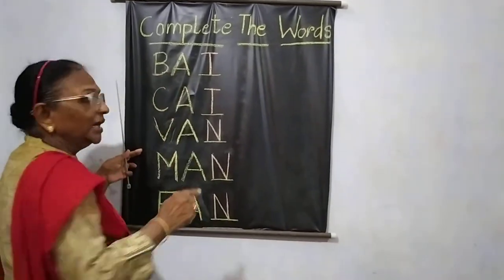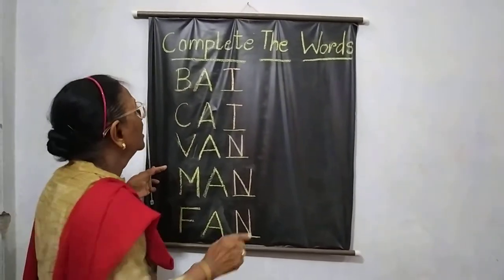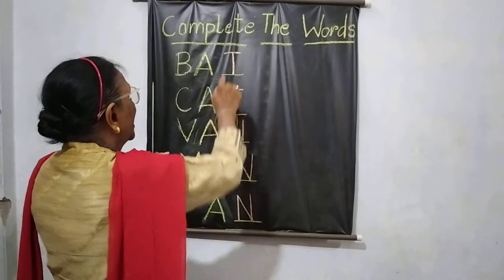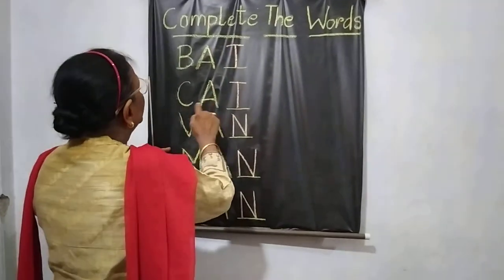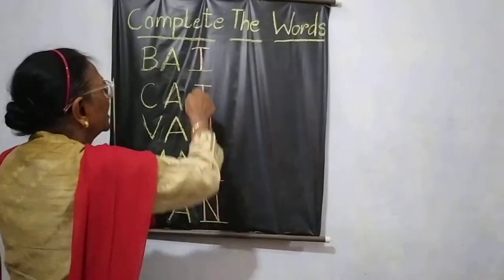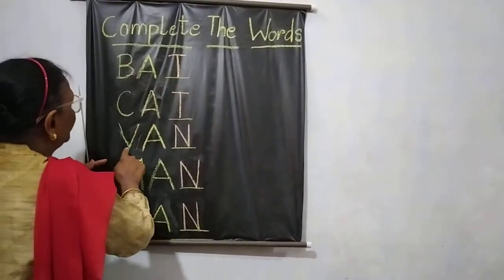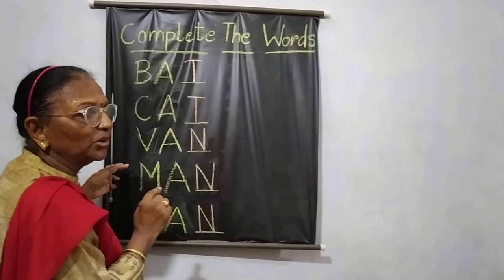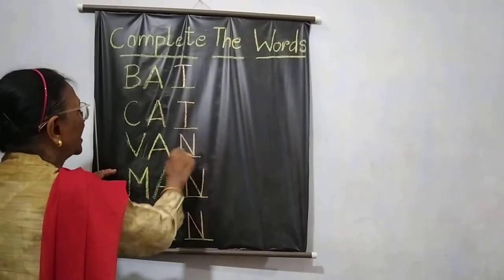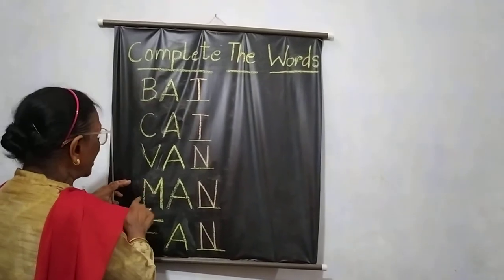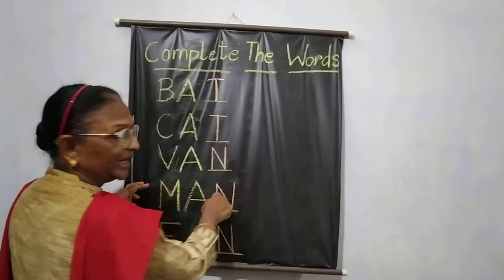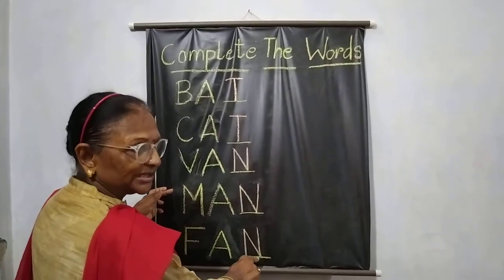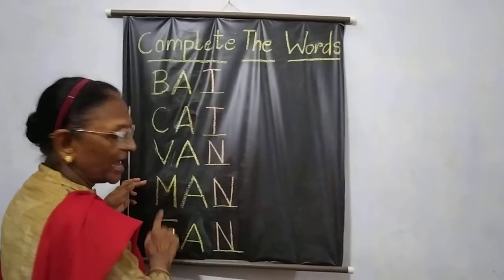Now you write this for me in your English classwork copy. You write like this — B-A and you put a dash on the red line, then fill up with T. Like that you put C, write C-A, write dash, and then you write the T. Again you write V-A, put a dash on the bottom blue line — second blue line — you put a dash and write N: V-A-N. The same you will do with M-A, put a dash, then fill up N: M-A-N. F-A you write, again dash on the second blue line and write N: F-A-N.